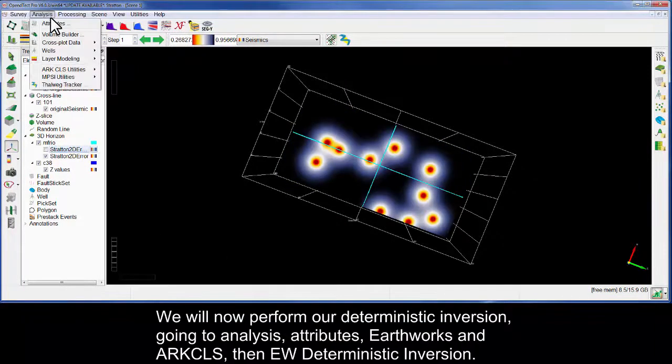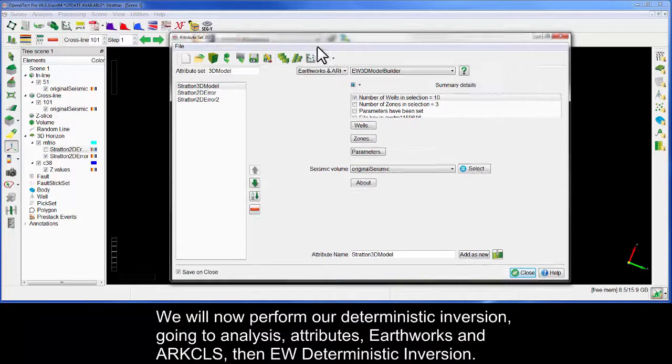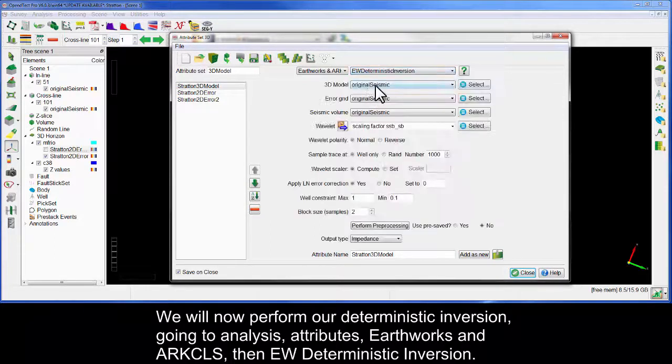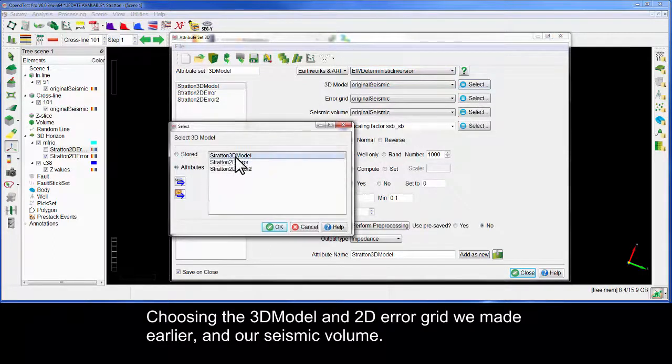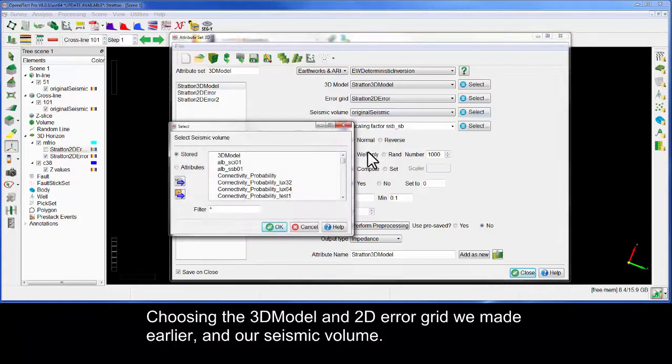We will now perform our deterministic inversion going to Analysis, Attributes, Earthworks and ArcCLS, then EW Deterministic Inversion, choosing the 3D model and 2D error grid we made earlier and our seismic volume.